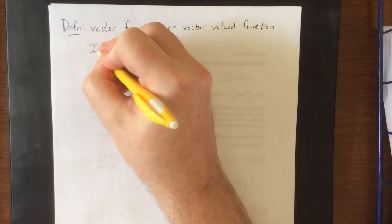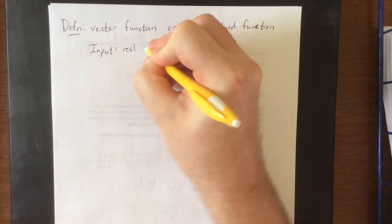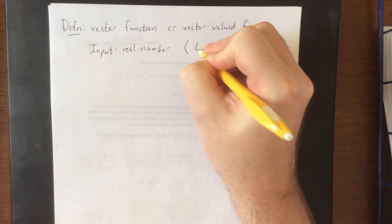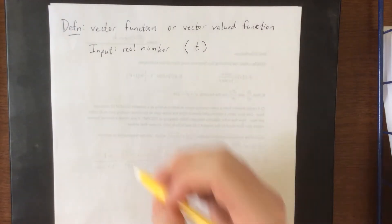For a vector function, the input is going to be a real number. Typically we use a parameter for this, and the most common parameter that we're going to use in the scope of this class will be t.